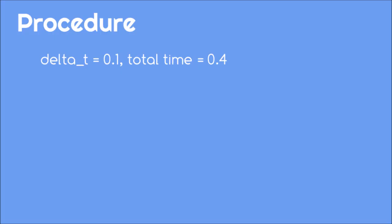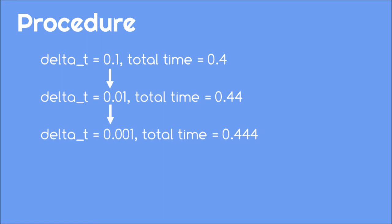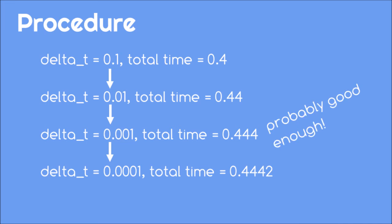In general, this procedure is useful for determining how to make your simulation's step size. Keep decreasing until you no longer see a significant change in the result. Remember, there's no point in making your code run significantly longer for an insignificant gain in accuracy. Of course, your instructor or research mentor might have a more specific idea of what counts as accurate enough, so be sure to check with them as you make these comparisons.